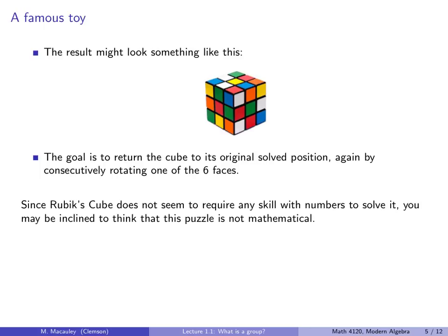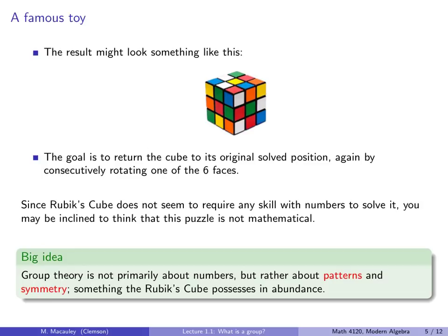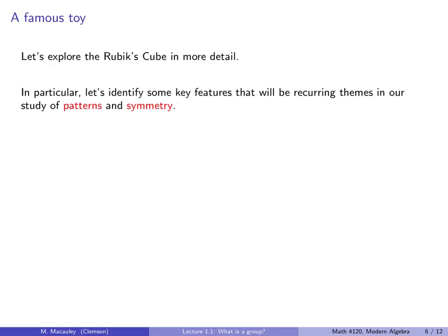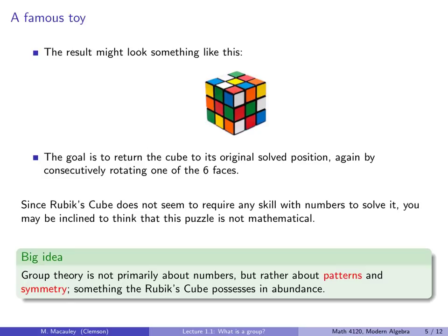Now the big idea from this lecture, and actually from the course, is group theory is not about numbers. There are plenty of numbers that arise in group theory, you can apply it to numbers, but the concepts behind group theory are about patterns and symmetry. And these are things that the Rubik's cube possesses in abundance.